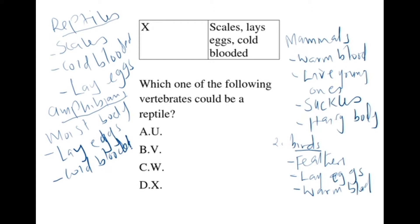Using that information, we can easily identify the reptile. Reptiles have scales, are cold-blooded, and lay eggs. So we have scales, lays eggs, and cold-blooded. Therefore the correct answer is X.